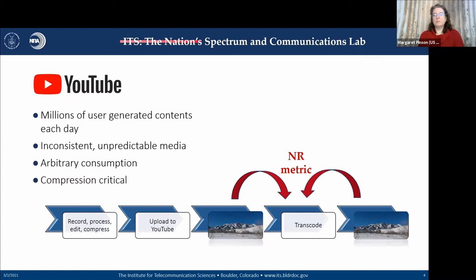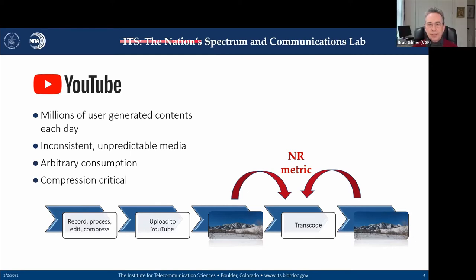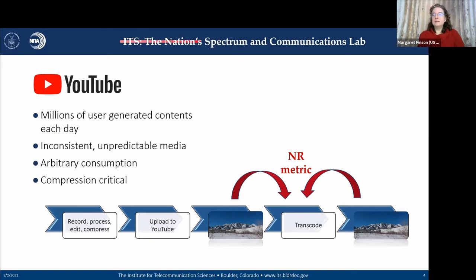Can you briefly explain the difference between a metric where you have a reference and one where you don't? If you have a reference — if you know what the video is supposed to look like — this is a much easier problem, because you can say the video was supposed to look like this and any deviations are a problem. In the situation we're talking about, you don't have a reference. You don't have a clue what the video was supposed to look like, so you have to model everything in the human visual system — your brain, your perception, and all of what's troubling you with the video.